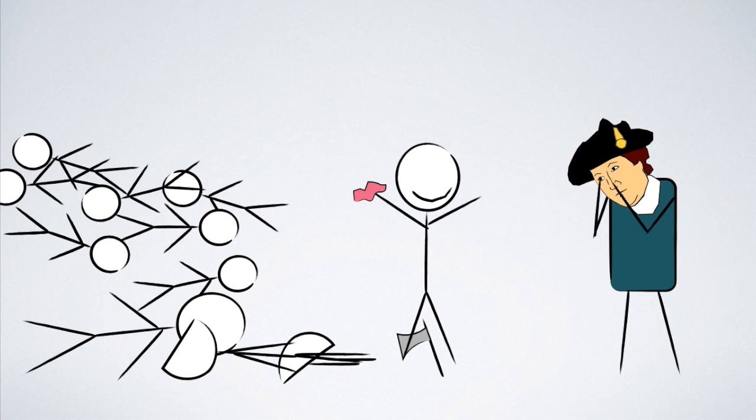Washington said, super job, Half-King. Way to start the French and Indian War. Please note, George Washington did not actually say this.